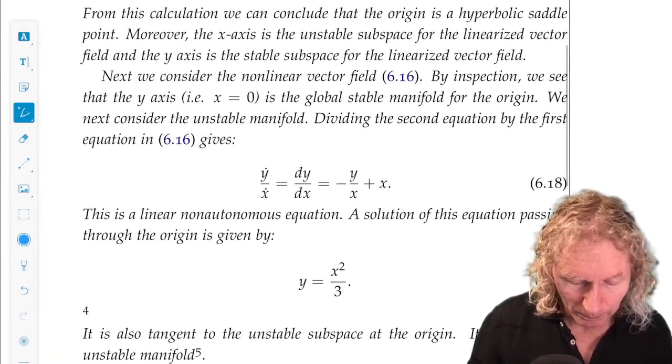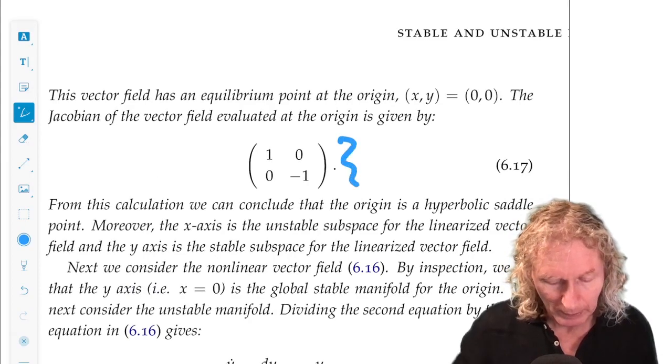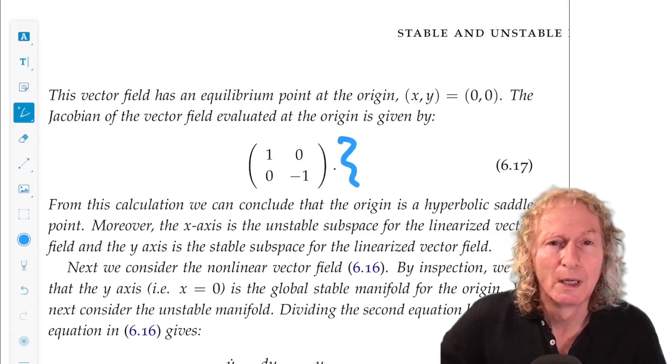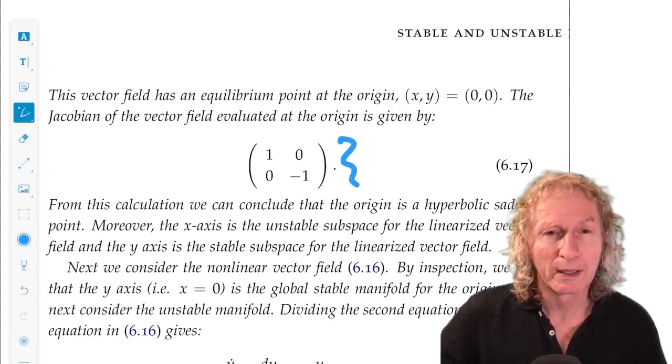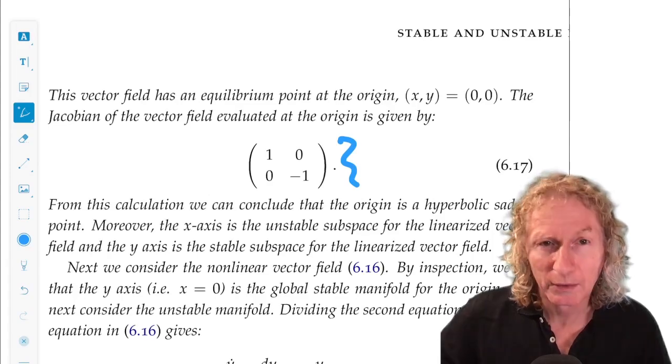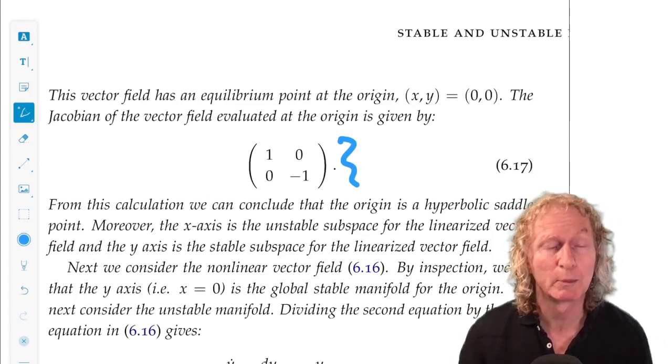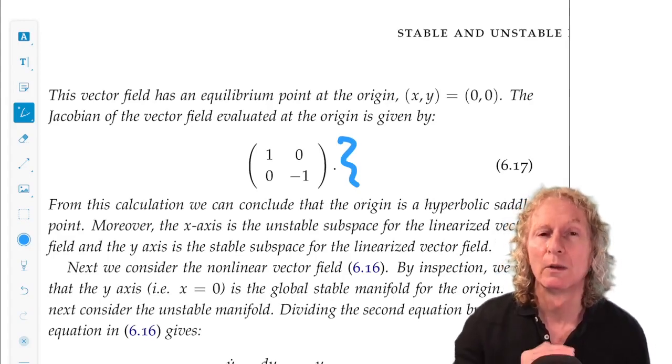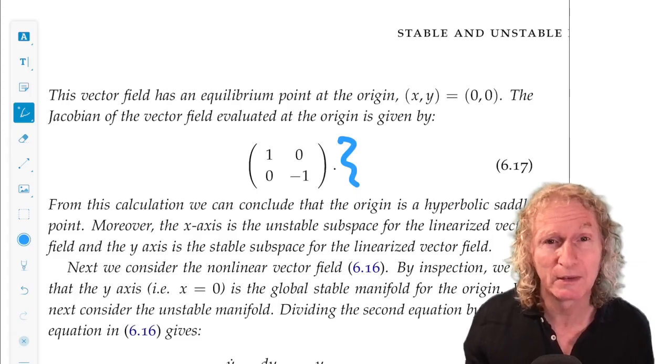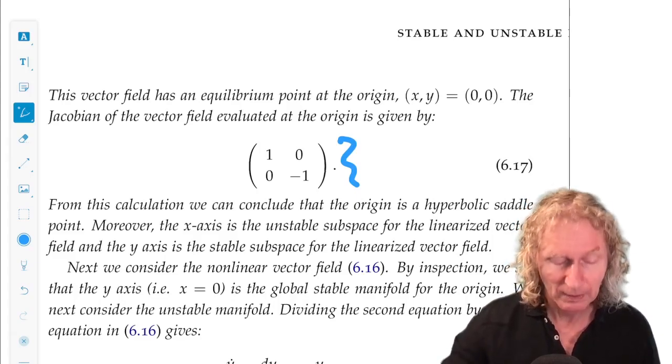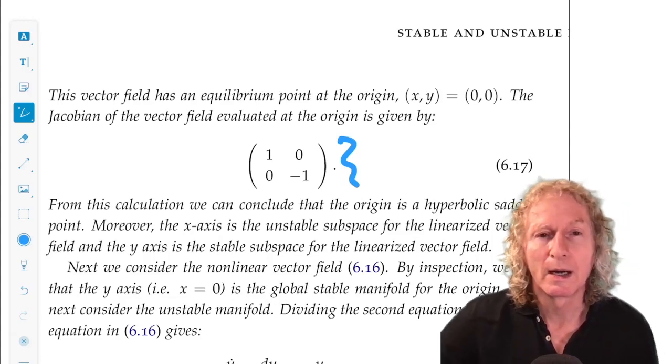Okay. And so, the linear part we saw, it's the Jacobian, and we see immediately that the x-axis, the horizontal axis, is the unstable subspace, and the y-axis is the stable subspace, but it's also the global stable manifold of the origin. They happen to be the same in this case, the stable subspace and the stable manifold.